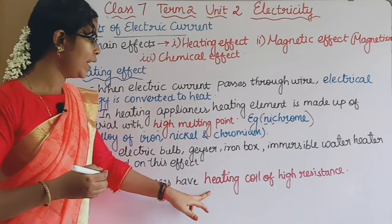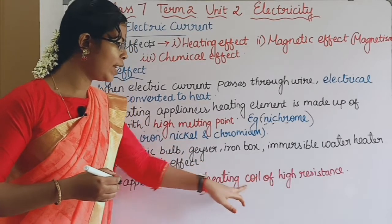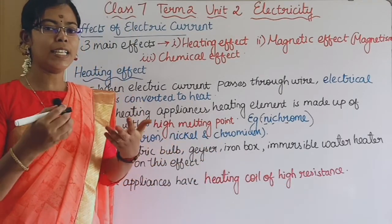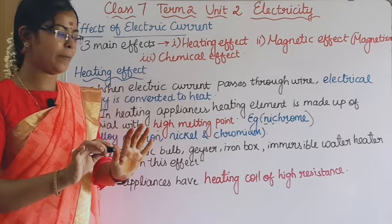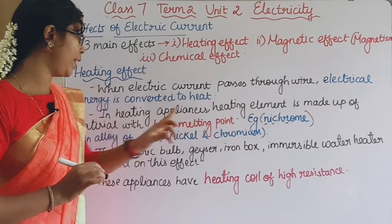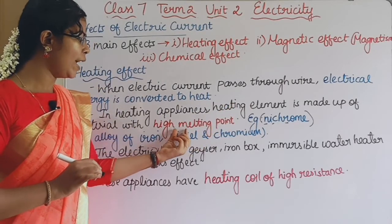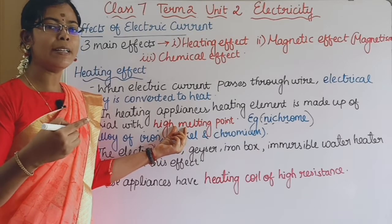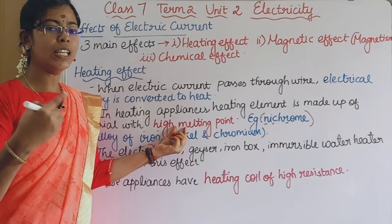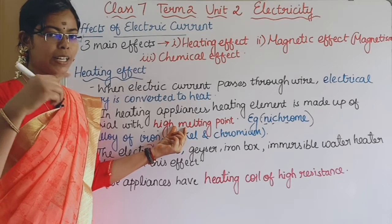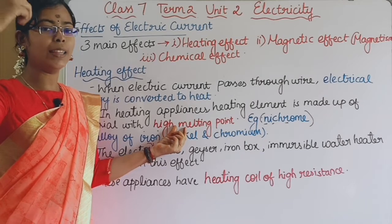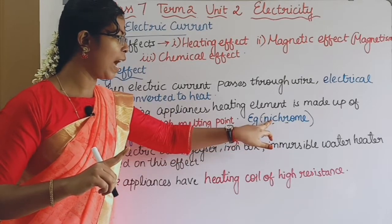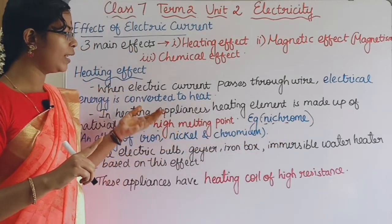These appliances have a heating coil of high resistance. That is a heating coil made of high resistance material. High resistance is used to resist the current. In heating appliances, the heating element is made up of a material with a high melting point. We use a high melting point so the material does not melt. For example, Nichrome — nickel, iron, and chromium — is the material used in heating appliances.